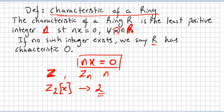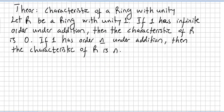If the ring has a unity, we can use the next theorem, which is very useful. Characteristic of a ring with unity: Let R be a ring with unity 1. If 1 has infinite order under addition, then the characteristic of the ring is 0. If 1 has order n under addition, then the characteristic of the ring is n.